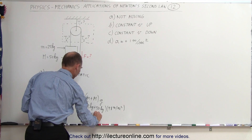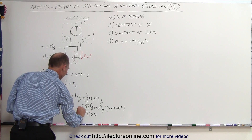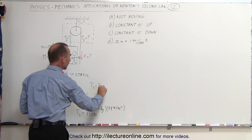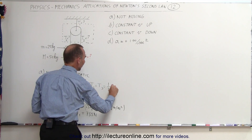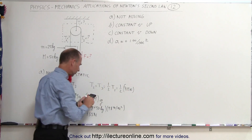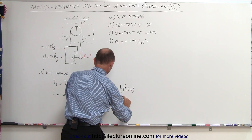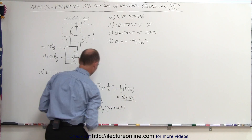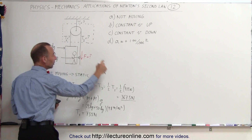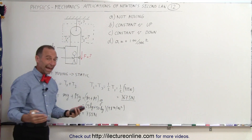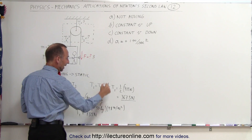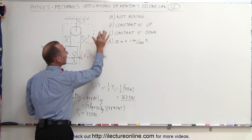So tension in cable 1 is 735 newtons. Since T2 equals T3, each is one-half of T1: T2 = T3 = 735 / 2 = 367.5 newtons. The force the person must apply equals T3, which is also 367.5 newtons. That is the solution when nothing is moving.